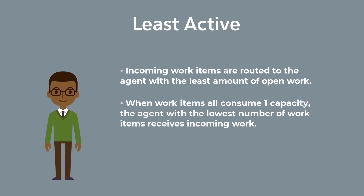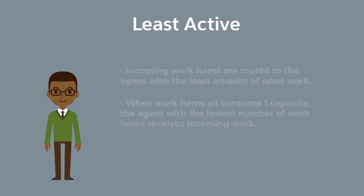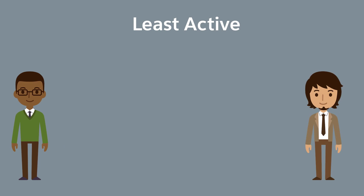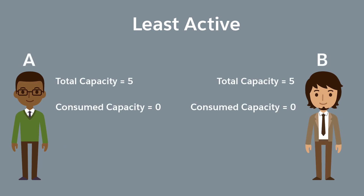Let's look at an example scenario where agents have work with varying capacity impacts. Here are two agents, Agent A and Agent B. Each agent has an overall capacity of five. Agent A has three active work items, each with a capacity impact of one, so a total capacity of three.